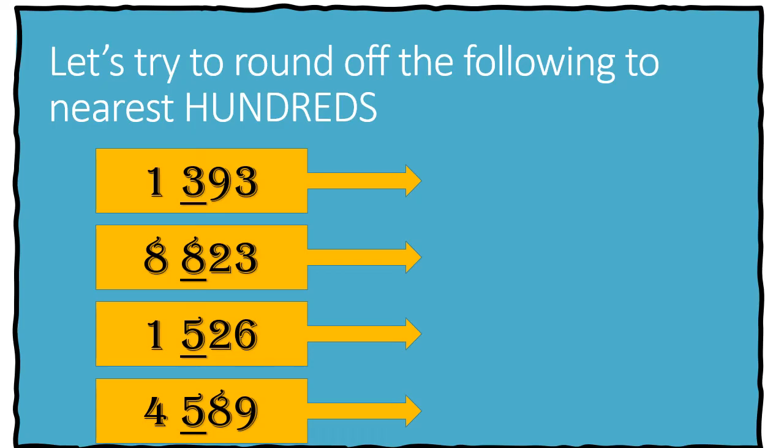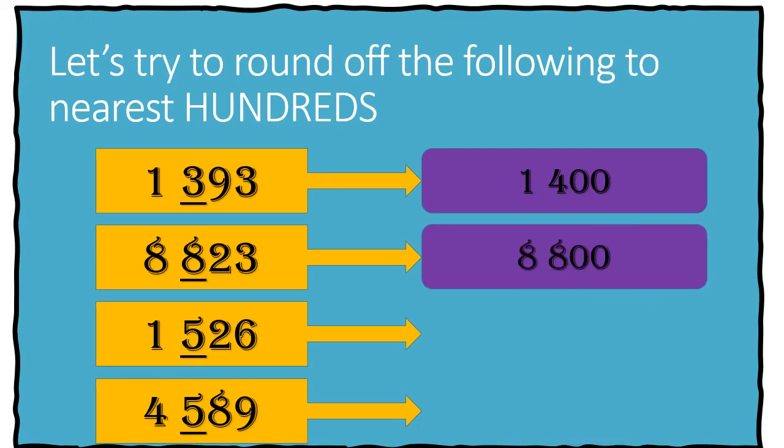Let's try to round off the following number to the hundreds place. We have 1,393. Round off to the nearest hundreds. We will have 1,400. 8,823. When round off to the nearest hundreds, we will get 8,800. If we have 1,526 and rounded off to the nearest hundreds, we will get 1,500.